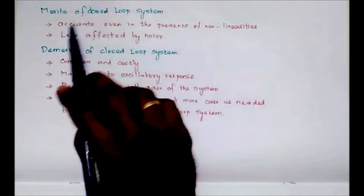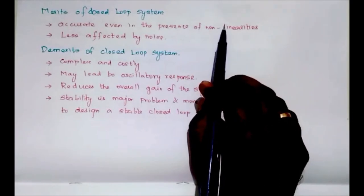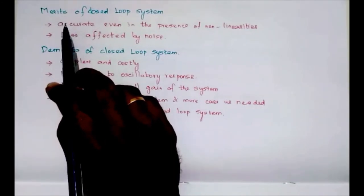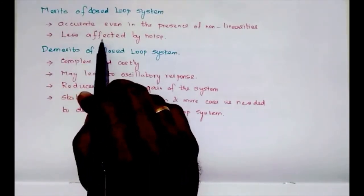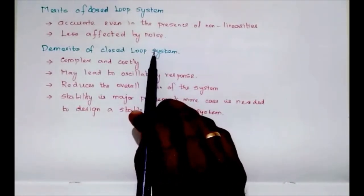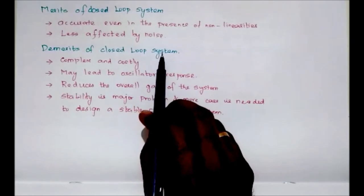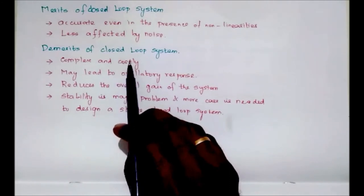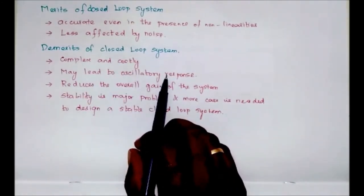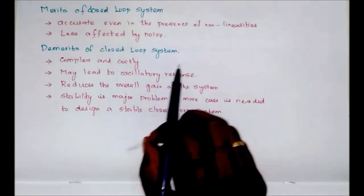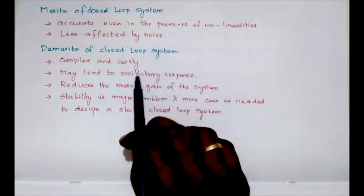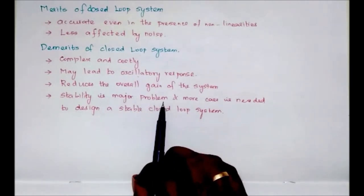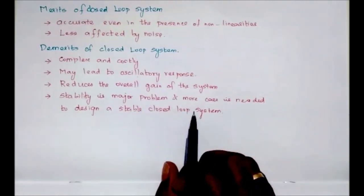The merits of a closed loop system: it is accurate even in the presence of non-linearities, less affected by noise, reliable, accurate, and noise-free. The demerits of a closed loop system: since there is feedback involved, it is complex, an extra block is added making it costly, and it may lead to oscillatory response. When a disturbance is given, it takes some time to reach steady state, generating oscillations. It also reduces overall gain, and stability is a major problem, requiring more care while designing a stable closed loop system.